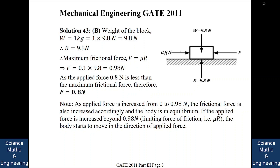Since the applied force of 0.8 N is less than the limiting frictional force of 0.98 N, the body does not move. Therefore the frictional force equals the applied force: 0.8 N. Once the applied force exceeds the limiting friction and the body starts moving, then the frictional force would be 0.98 N.